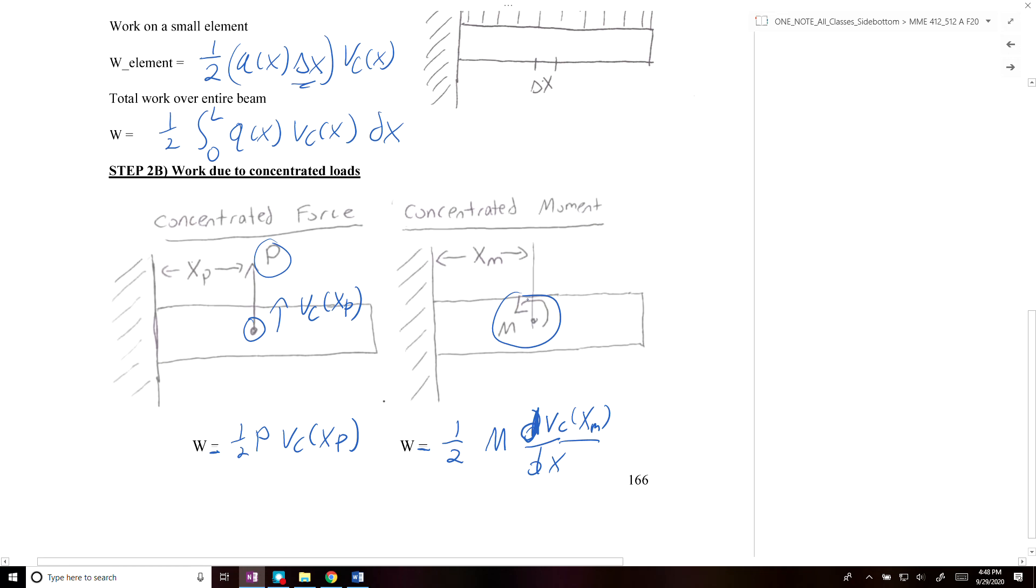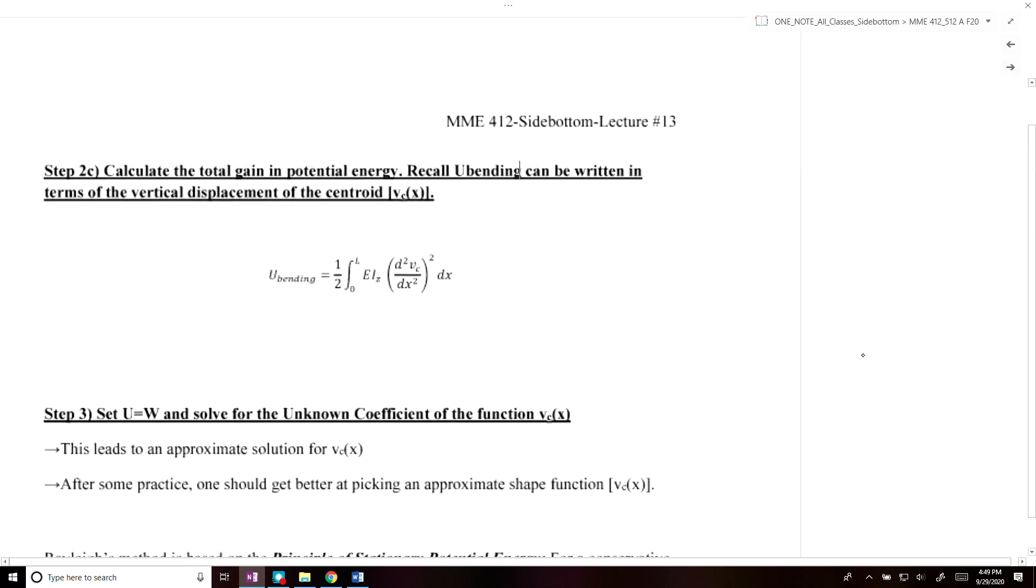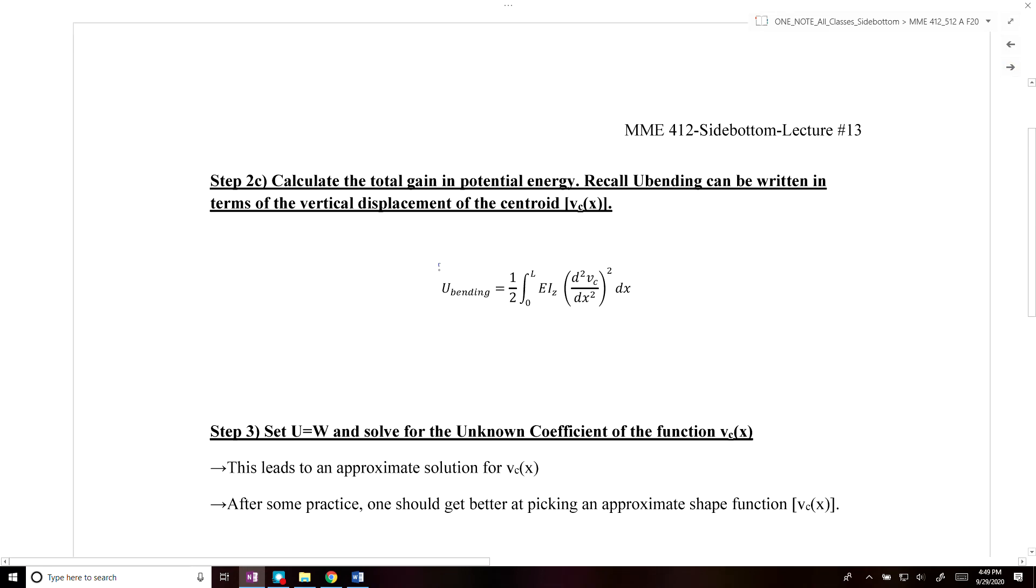Once we have our work calculated, we then need to calculate the bending moment. We can write the strain energy due to bending as the integral of EI times the second derivative of the vertical displacement with respect to x, squared.